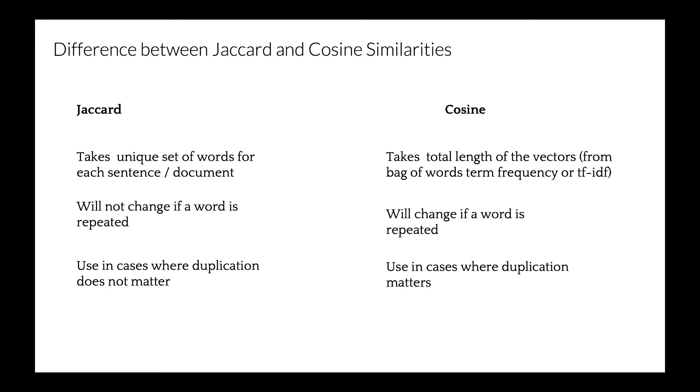This means that if we repeat the word friend in sentence one several times, cosine similarity will change the score, but Jaccard similarity will not. In other words, Jaccard similarity is a good method to use for cases where duplication does not matter.